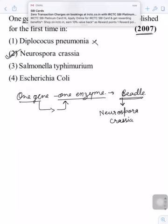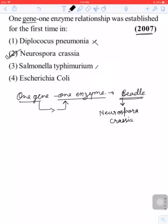So this option is correct. Third is Salmonella typhimurium - this option is wrong. Fourth is Escherichia Coli - this is wrong option.